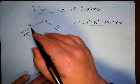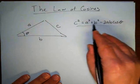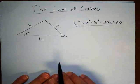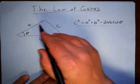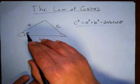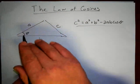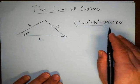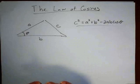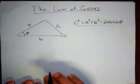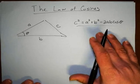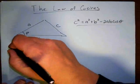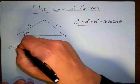If you're given these two sides and this angle, you can fill all this out and find C by taking the square root of everything. Also, if you're given the three sides of a triangle, you can find a missing angle by solving this as a trig equation. Now I want to prove this relationship, because it's really not that bad of a proof.